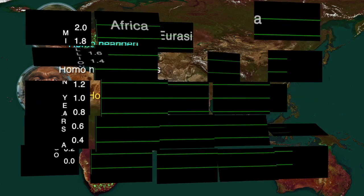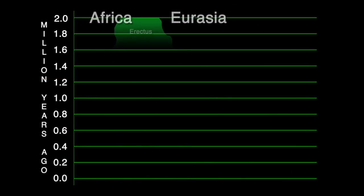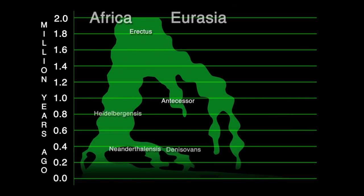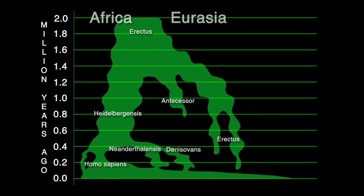If we look at this chart of the evolution of the genus Homo over the last 2 million years, we can get a general idea of how it seems to have unfolded according to current theory. As this is a very dynamic and complex area of current anthropological theory, it's hard to pin down absolutes. We will use this as a general guide.